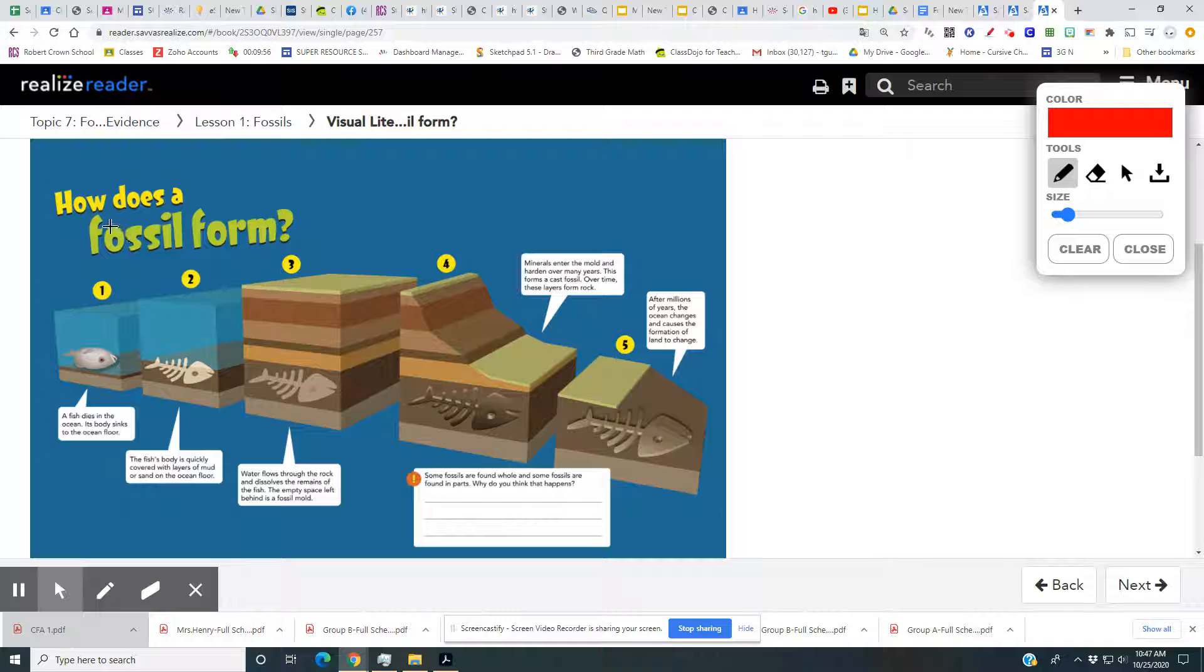Well, let's take a look at how does a fossil form. Number one, a fish dies in the ocean. Its body sinks to the ocean floor. So here's number one, this poor guy. The fish's body is quickly covered with layers of mud or sand on the ocean floor. So you can see right here, it's covered up.